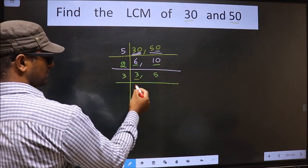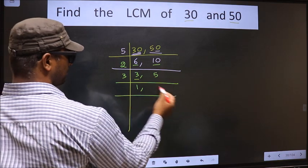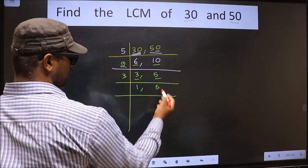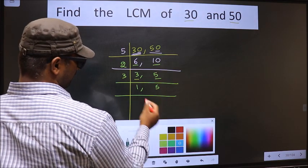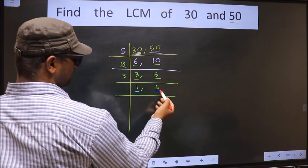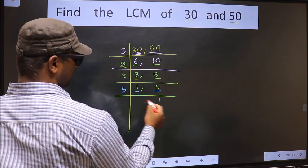Now here we have 3, 3 is the prime number, so 3 wants 3. The other number 5, not divisible by 3, so we write down 5 as it is. We got 1 here, so focus on the other number, that is 5. 5 is the prime number, so 5 wants 5.